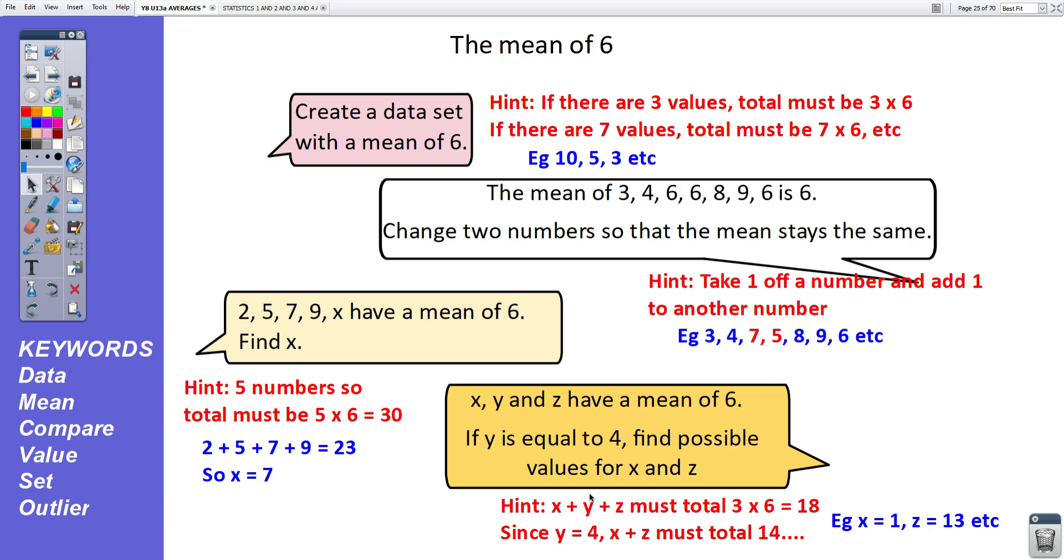x, y, and z have a mean of 6. If we've got a mean of 6, their total must be 18. If y is 4, x plus z must be 18 take away 4, which is 14. So x and z must add up to 14. There could be 1 and 13, 2 and 12, 3 and 11, and so on. Any two numbers that total up to 14.